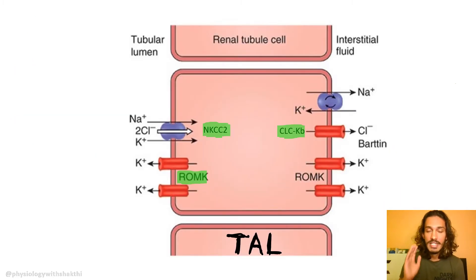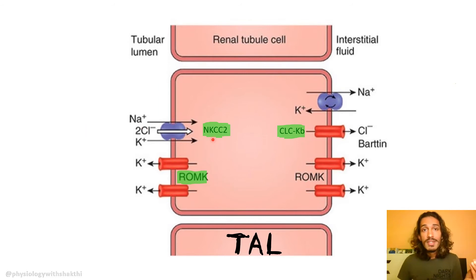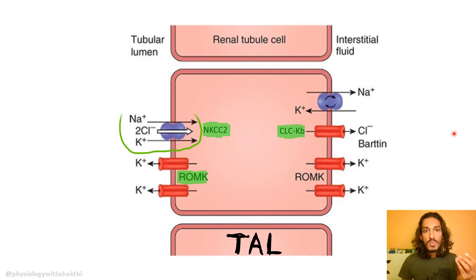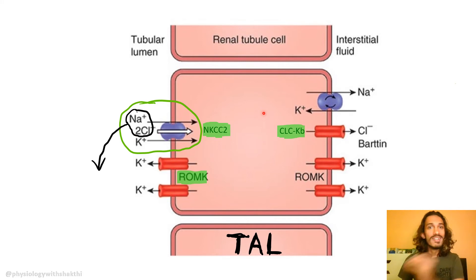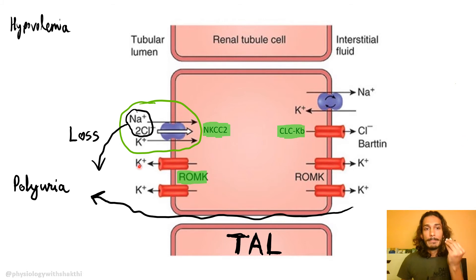Now let's understand the clinical features step by step. In Bartter syndrome, if any of these transporters are affected, ultimately the gradient needed for sodium, chloride, and potassium to come in is disrupted. The major problem is that sodium and chloride are not reabsorbed — they go out into the urine. Sodium chloride is osmotically active, so water also follows, resulting in polyuria.